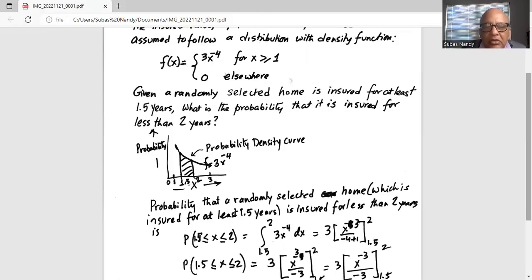So we draw two vertical lines from the probability density curve to meet the horizontal axis x axis at x equal to 1.5 and the other one to meet the horizontal axis at x equal to 2 and we'll find the area of the shaded portion.